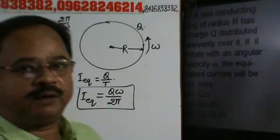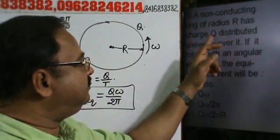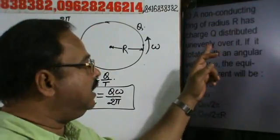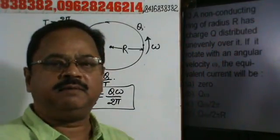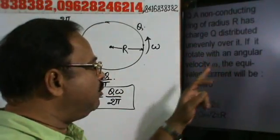So, abha hai hai isko e problem ke throop kata hai. A non-conducting ring of radius R has charge Q distributed unevenly over it. Unevenly means non-uniformly. If it rotates with an angular velocity omega...